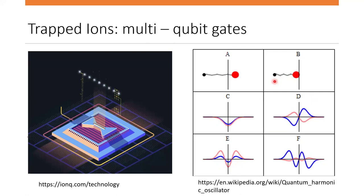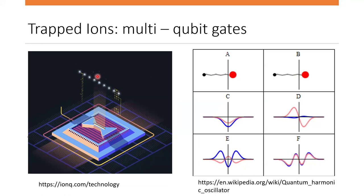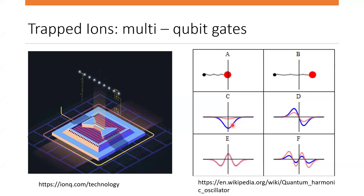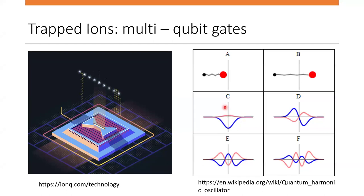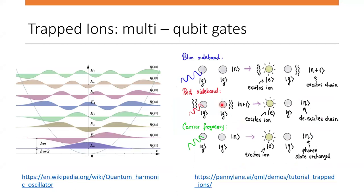To perform multi-qubit gates, we place the ions next to each other to form a chain. This chain can vibrate with specific quantized energy, very similar to a harmonic oscillator. The absorbed or emitted packets of energy are called phonons. In some circumstances the energy of the photon can be slightly higher — called the blue sideband — or slightly lower — the red sideband. When the photon energy is slightly higher than the energy gap, the chain also gets excited. You can think of the energy levels of the chain as those of a quantum harmonic oscillator.